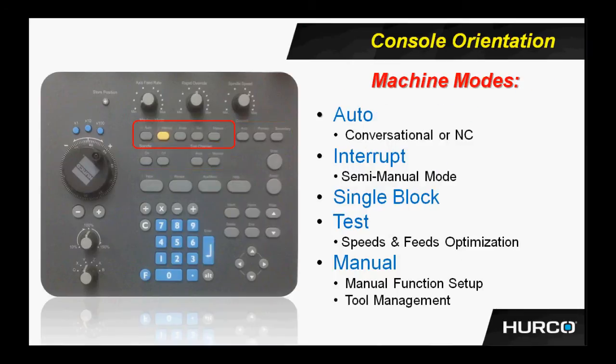We have machine modes. The far left is the auto button. This is used to execute any conversational NC program that happens to be active at the moment. We have the interrupt button. When this button is depressed, the Z-axis will lift all the way to the home position. Coolant will stop, the spindle will stop, and the machine will be entered into what we call a semi-manual mode.